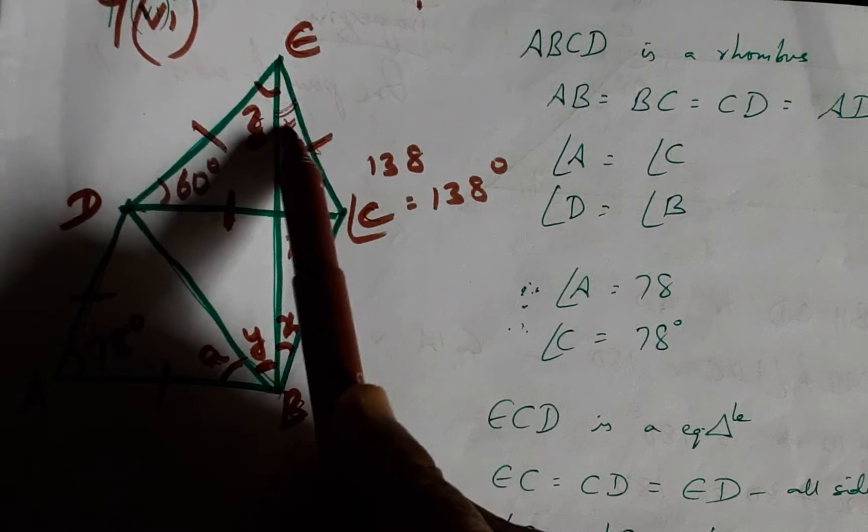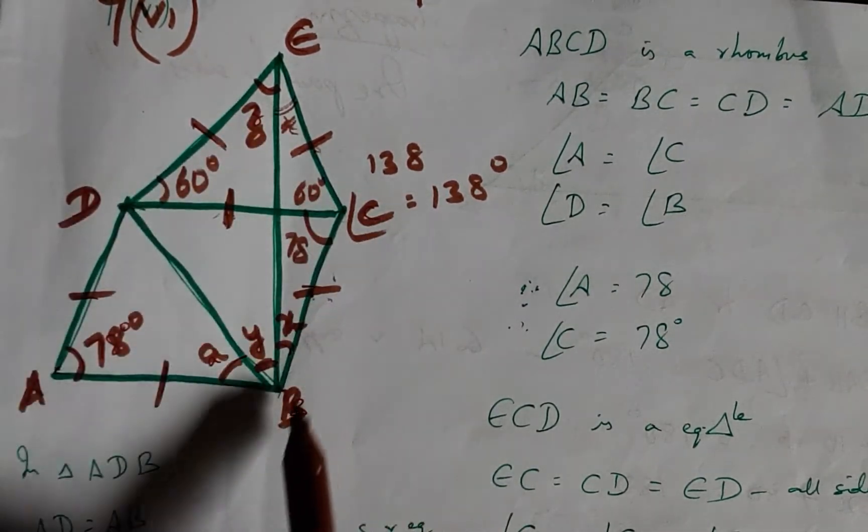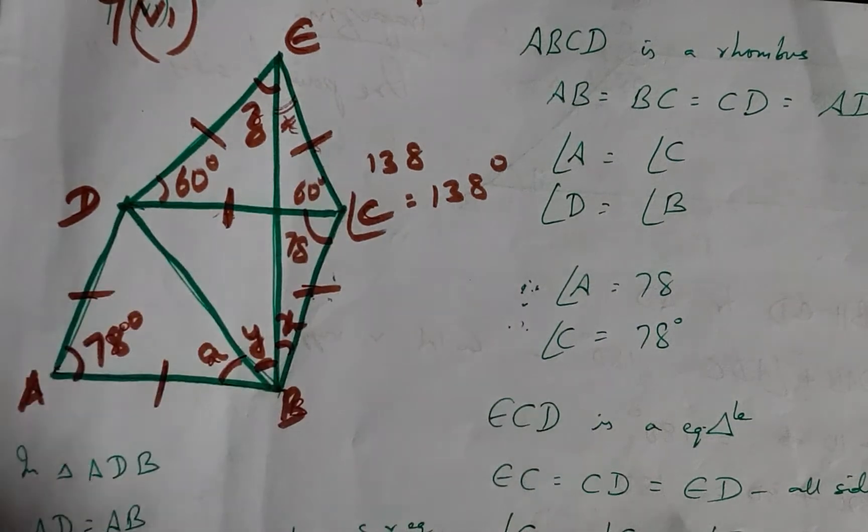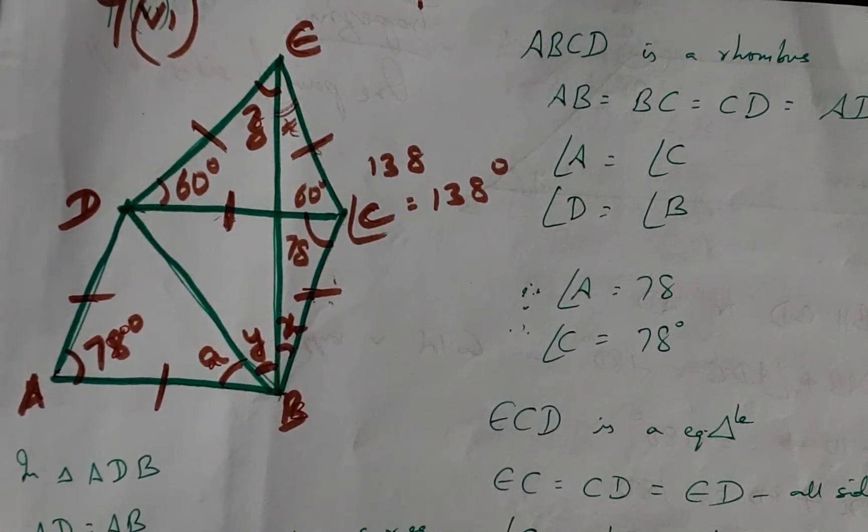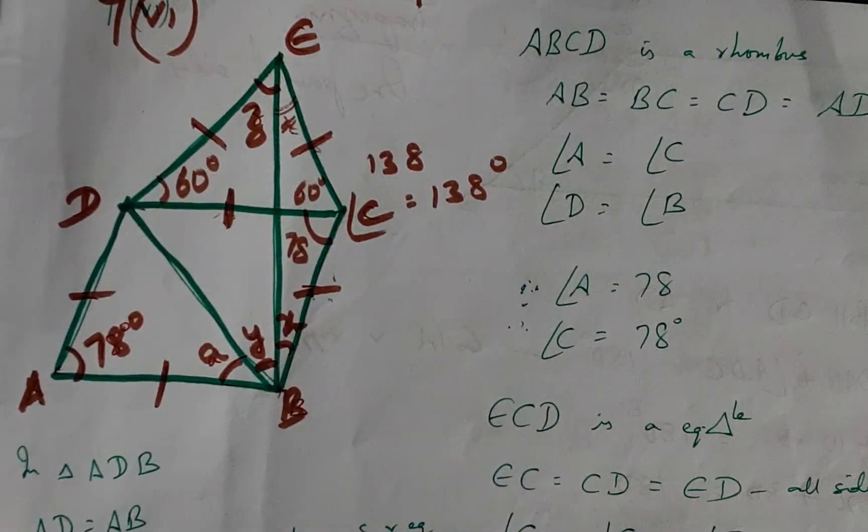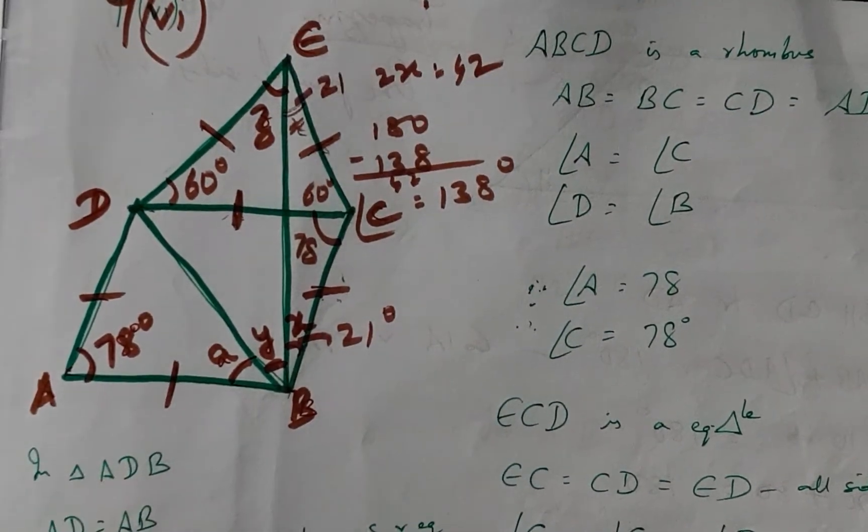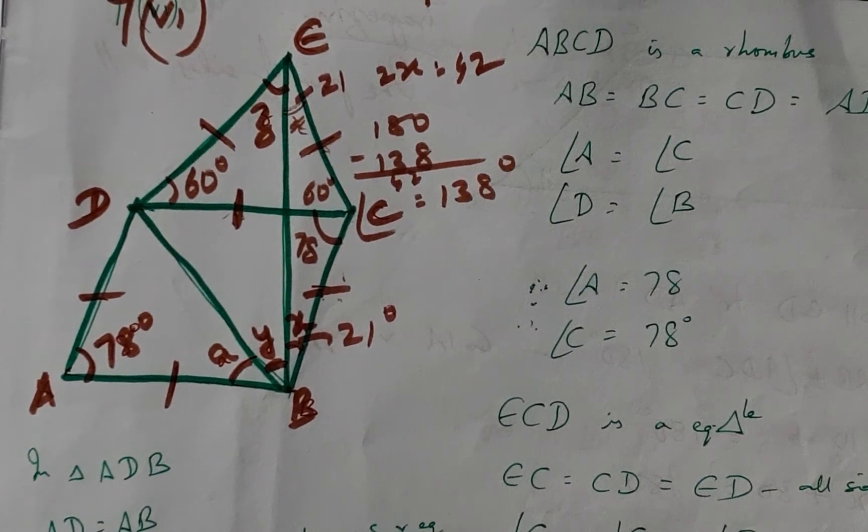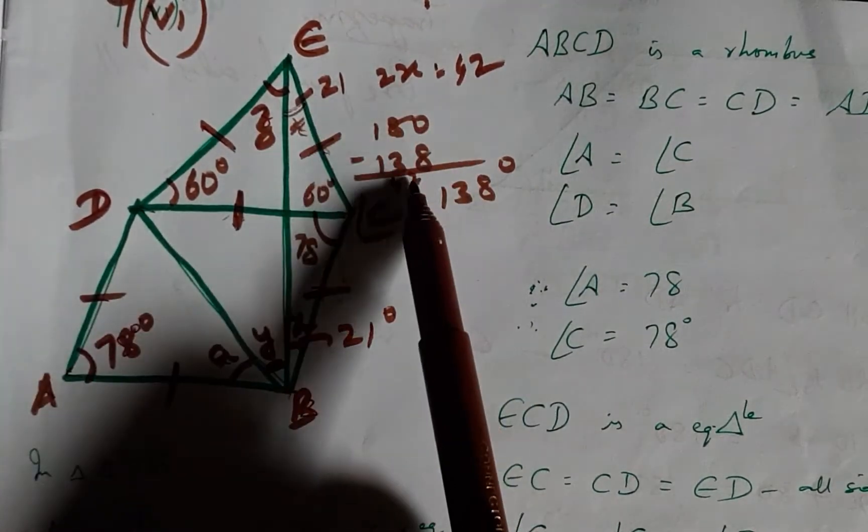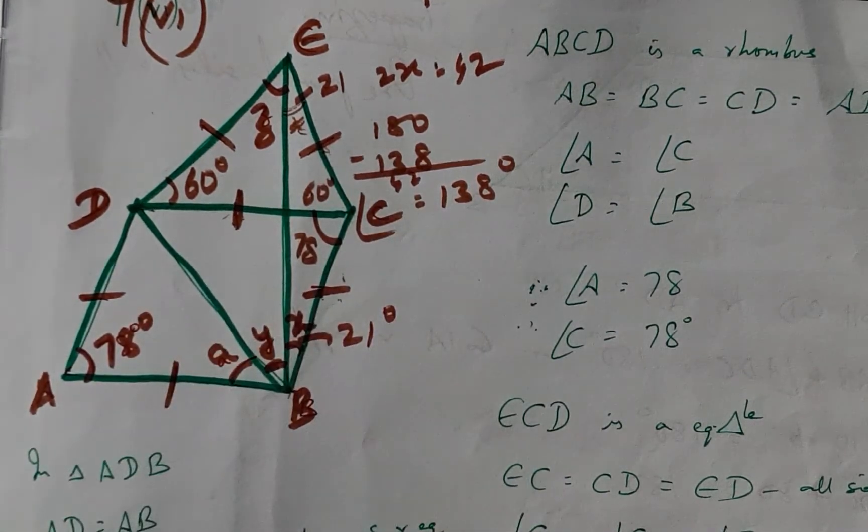Therefore, if this is X, this will also be X, and applying angle sum property to this, we have 2X plus 138 equals 180. X will be 180 minus 138 divided by 2. Since this is 42, 2X will be 42, and therefore X will be 21.